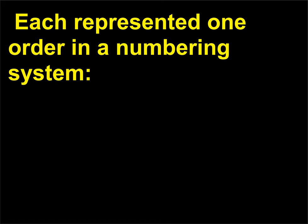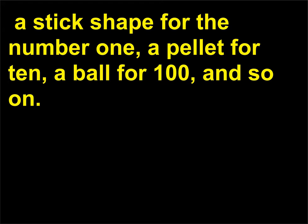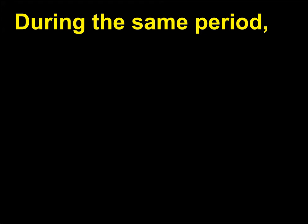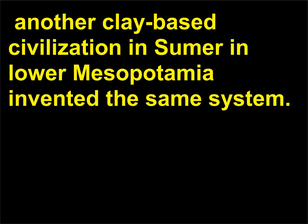Each token represented one order in a numbering system: a stick shape for the number one, a pellet for ten, a ball for one hundred, and so on. During the same period, another clay-based civilization in Sumer in Lower Mesopotamia invented the same system.